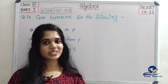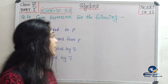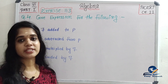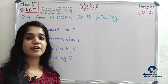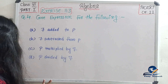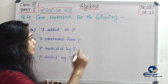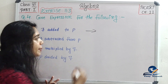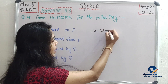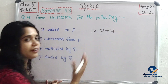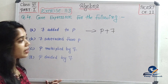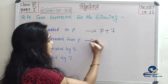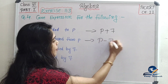Question number 4: give expressions for the following. The first question is 7 added to p, so the expression is p plus 7. The next question is 7 is subtracted from p, giving p minus 7.